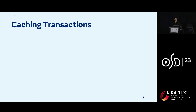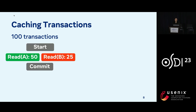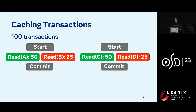To give intuition behind the right caching decisions for transactions, I'll go through a simple example. We have a workload of 100 transactions. Half of them are reading A — of these, 25 are also reading B, and the other 25 are reading some other cold keys. For the other half, we have 50 transactions reading C, with 25 of these also reading D, and the other 25 reading some other cold keys.